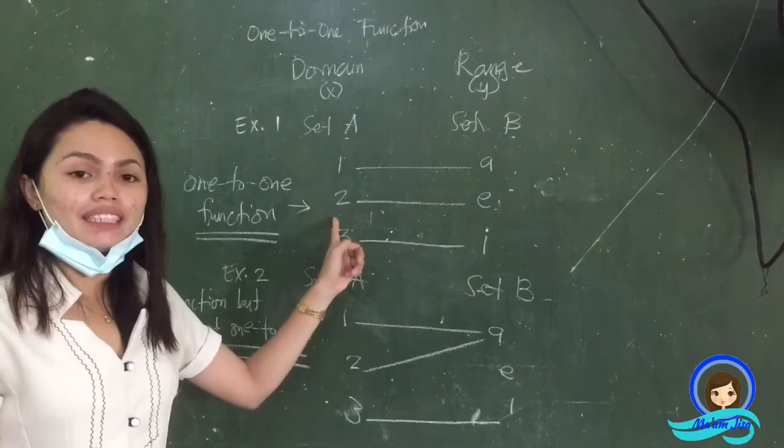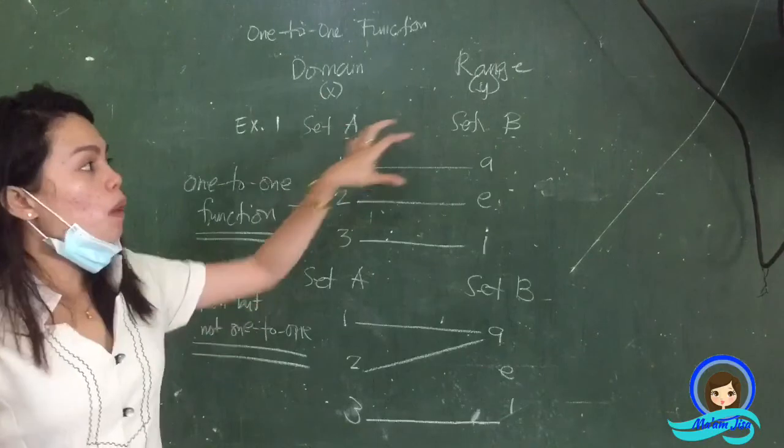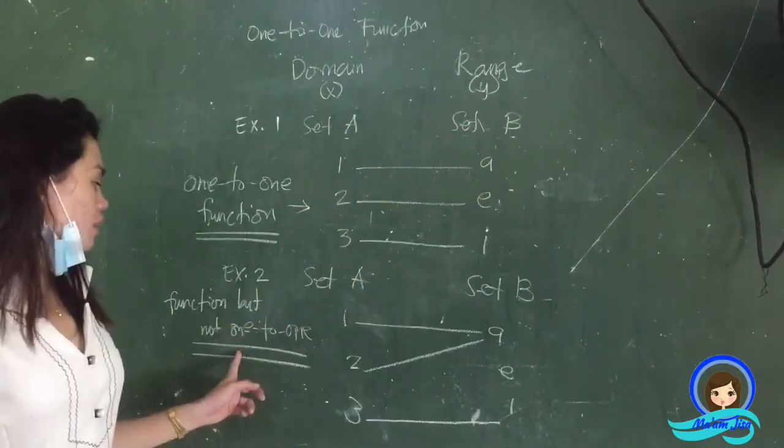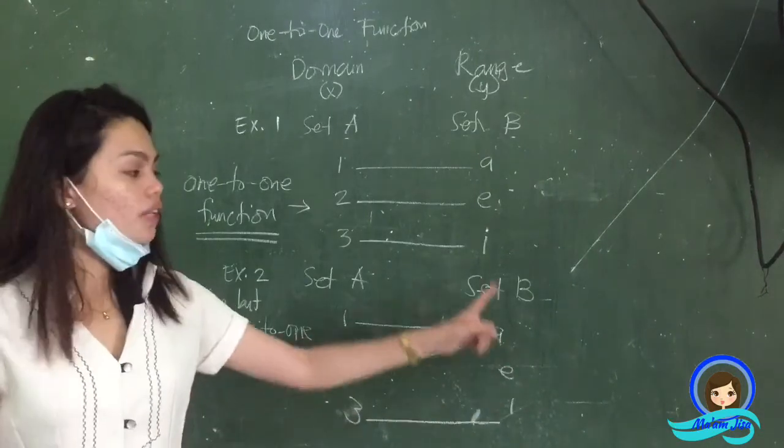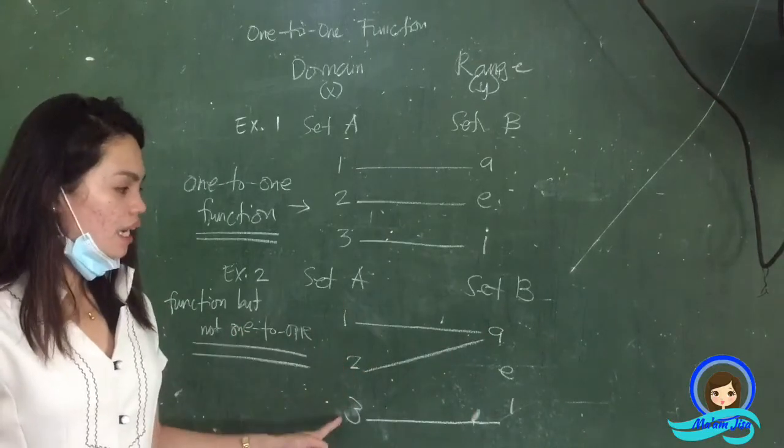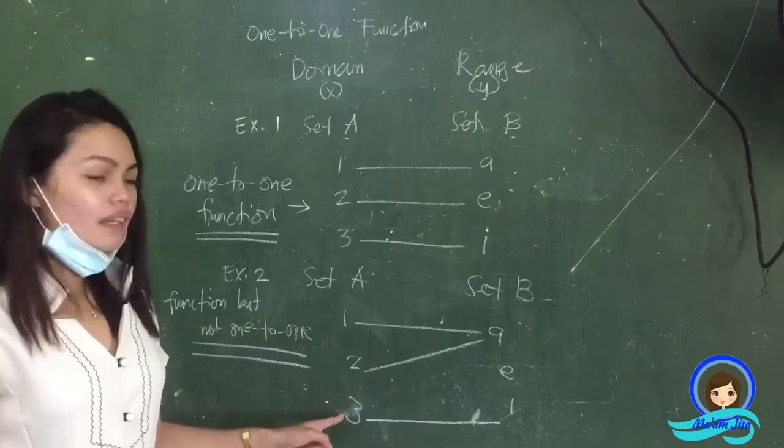In other words, the second example is a function but not one-to-one. Why? It's because although the elements in the range are paired to a unique element in the domain, the domain is not paired to a unique element in the range.